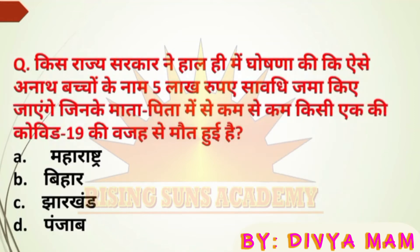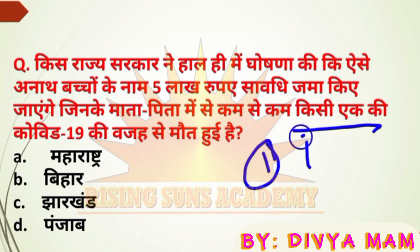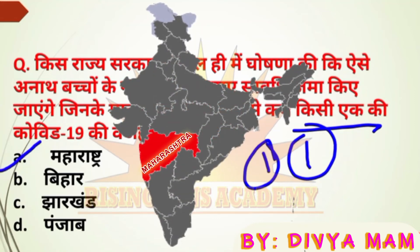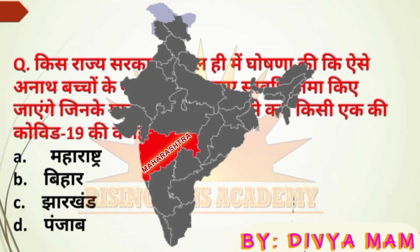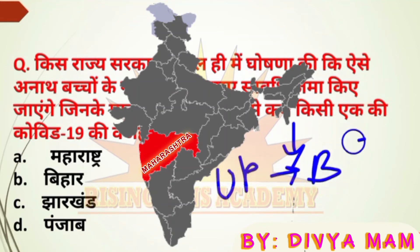The next question asks which government scheme provides financial support for children whose parents have died. The scheme provides a fixed deposit of 500,000 rupees. If asked about this scheme, the answer is related to Uttarakhand.